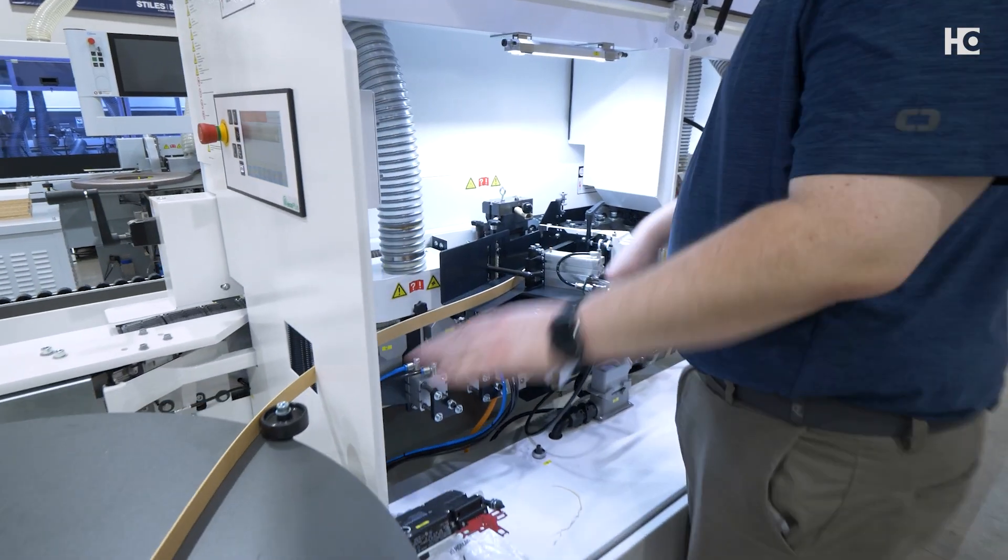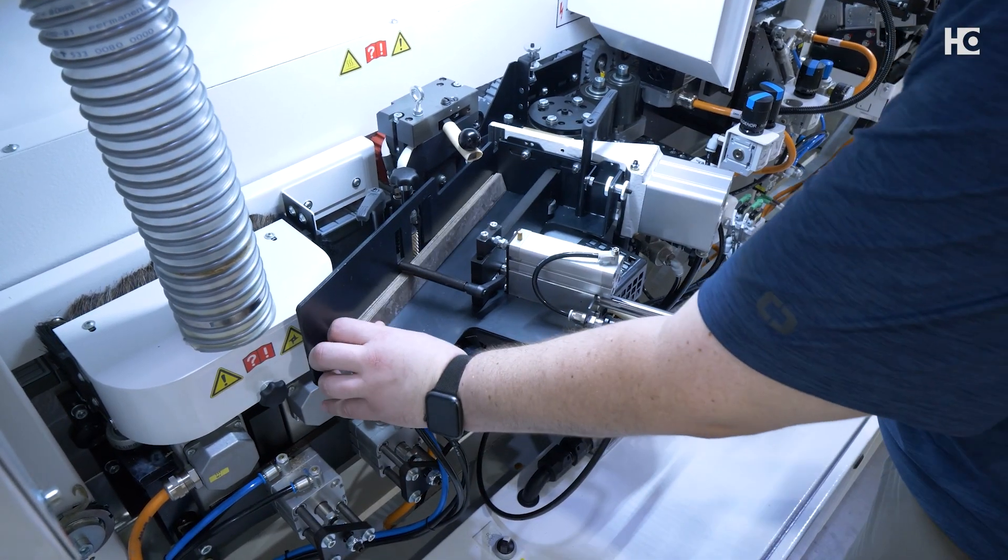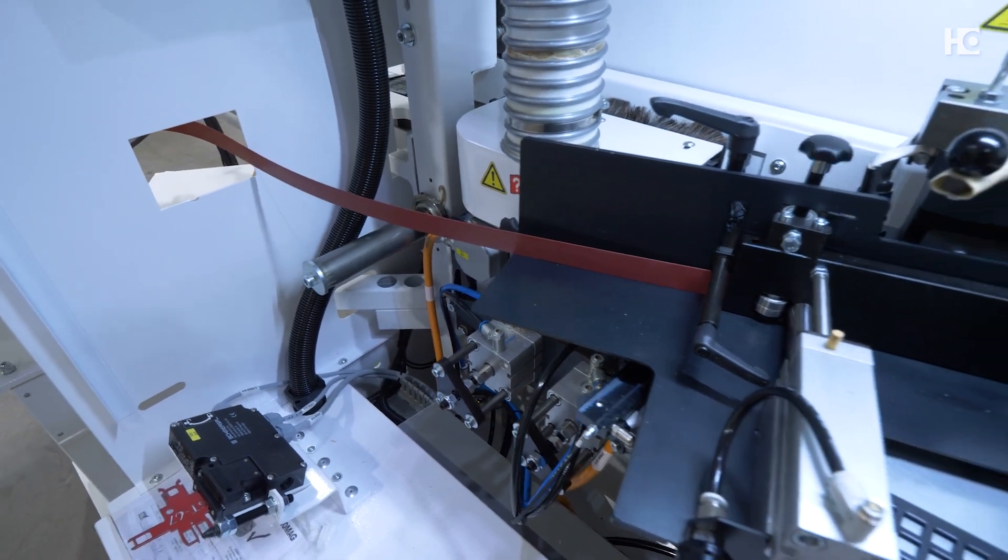The S200 can process edge banding in both coils and strips up to 3 millimeter thickness. Multiple strips can be placed on the magazine for the machine to fit one at a time.